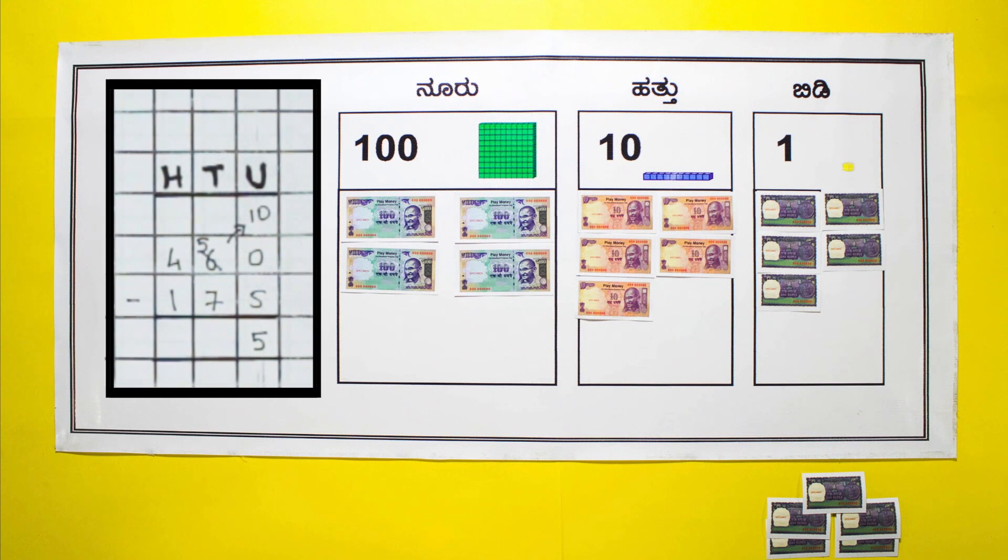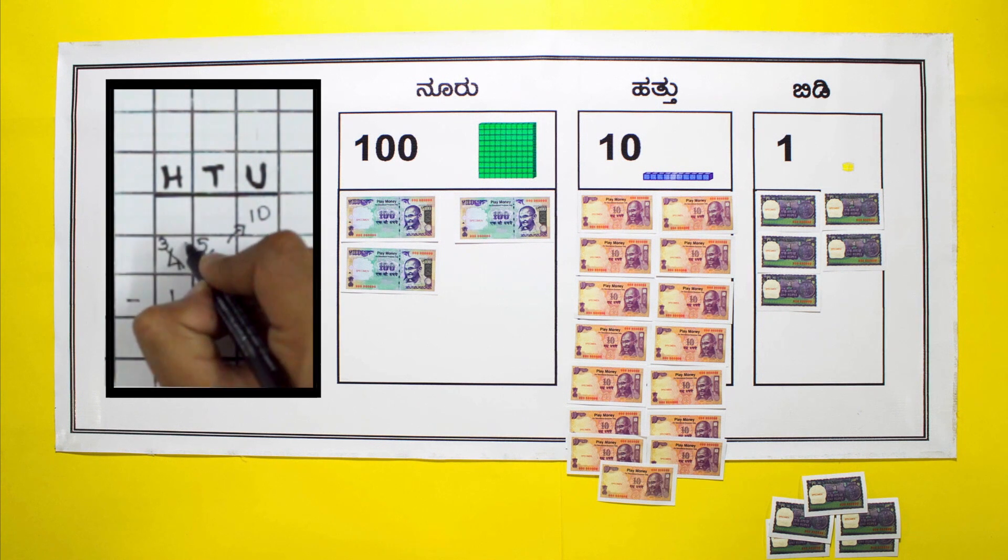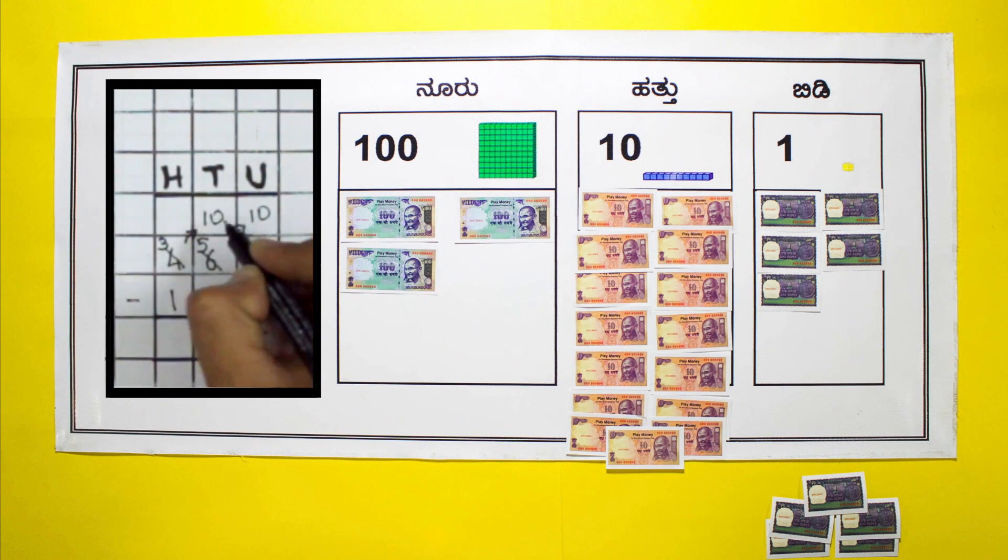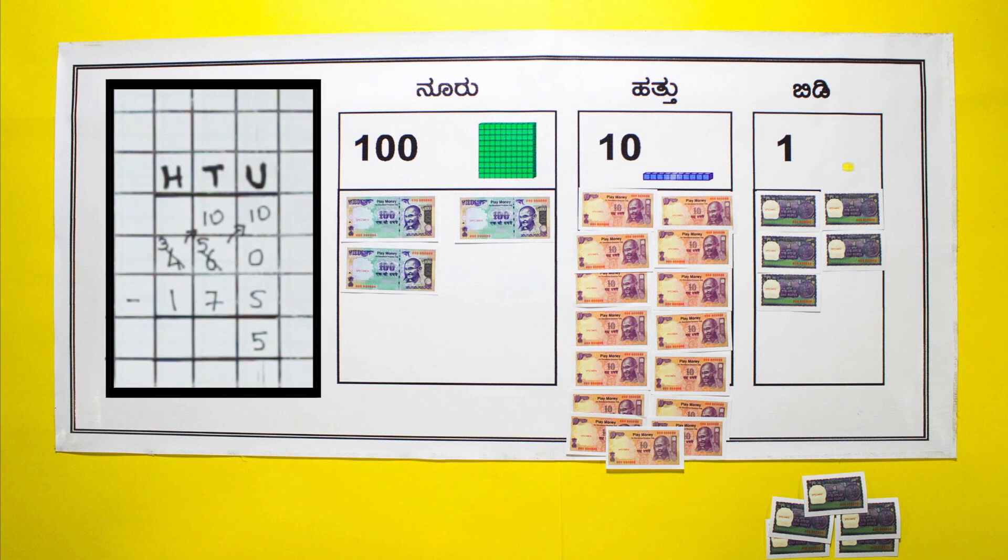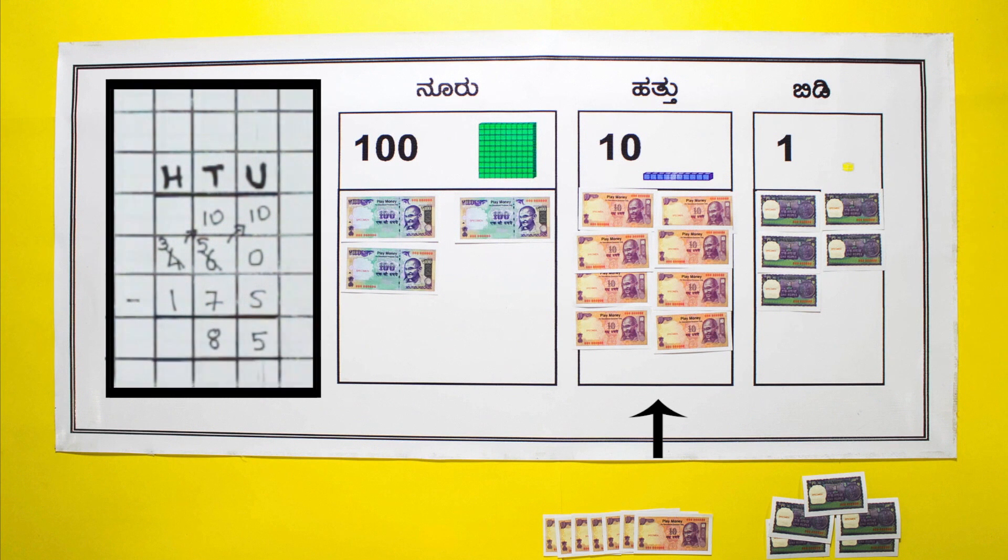Now she moves one step to the left. 7 cannot be subtracted from 5 unless she borrows 1 hundred rupee note and changes it for 10 ten rupee notes. 10 plus 5 makes 15. She now has 15 tens. When she takes away 7 tens, 8 notes are left in the tens place.